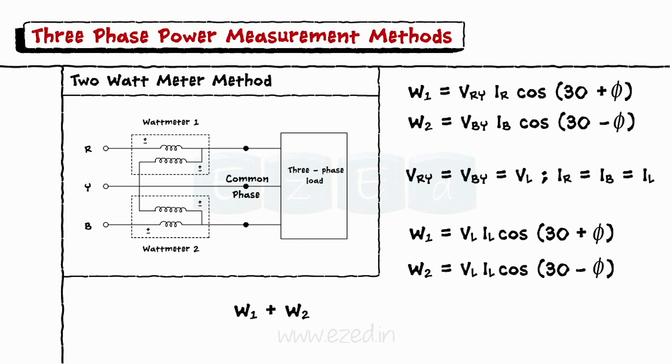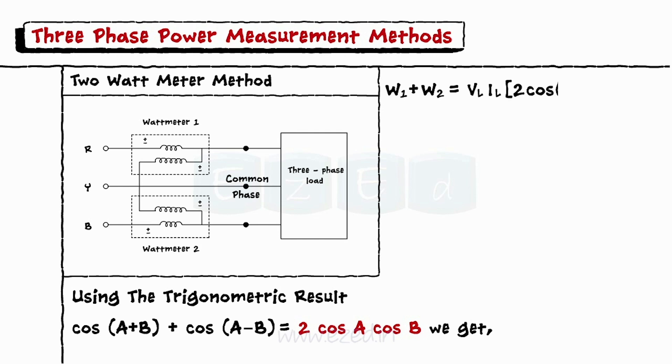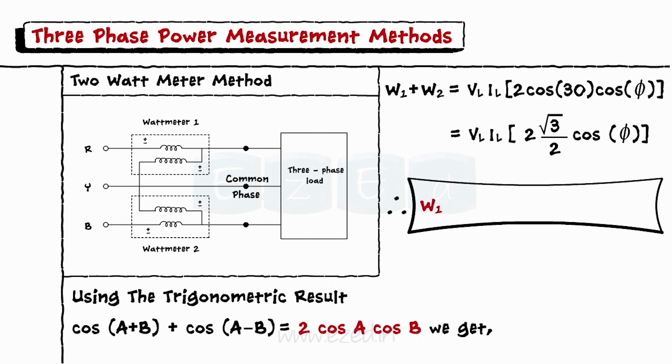Adding the two, we get W1 plus W2 equals VL IL into cos 30 plus phi plus cos 30 minus phi. Using the trigonometric result of cos of A plus B plus cos of A minus B equals 2 cos A cos B, we get W1 plus W2 equals VL IL into cos 30 cos phi, and W1 plus W2 equals root 3 into VL IL cos phi.